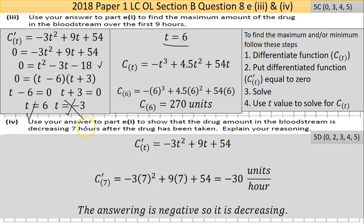Part (e4) says use your answer from (e1) to show that the drug in the bloodstream is decreasing seven hours after the drug has been taken. Put t = 7 into the differentiated function and you get −30 units per hour. Because it's negative, that means it's decreasing — you need to state that clearly to get the full five marks. That's the end of Question 8. It's a long question — easy enough if you know what you're doing, but practice makes perfect. See you on Question 9.